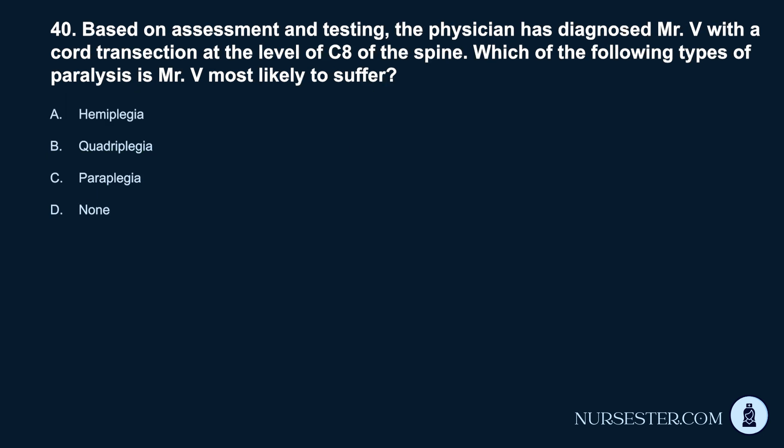Question 40. Based on assessment and testing, the physician has diagnosed Mr. V. with a cord transection at the level of C8 of the spine. Which of the following types of paralysis is Mr. V. most likely to suffer? A. Hemiplegia. B. Quadriplegia. C. Paraplegia. D. None.